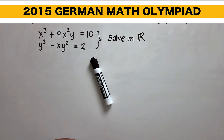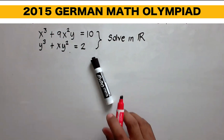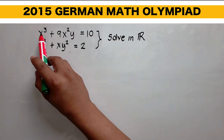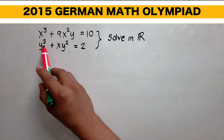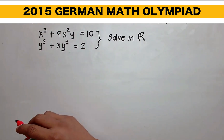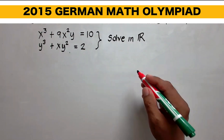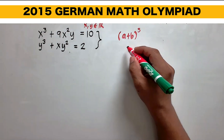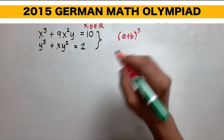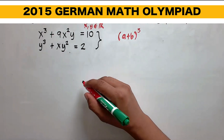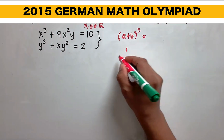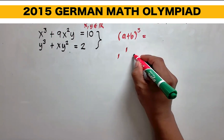Now, let's solve this problem together. Let's analyze the question. We have here x cubed and y cubed, so this is a cubic equation. Let's recall the cube of a binomial. Let's recall the Pascal triangle.